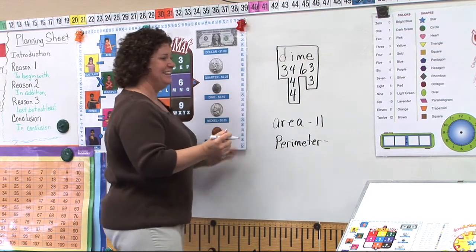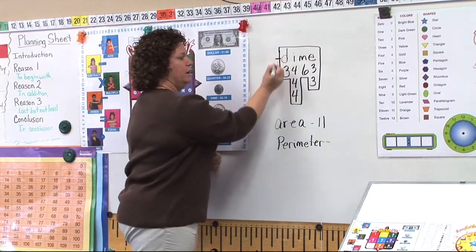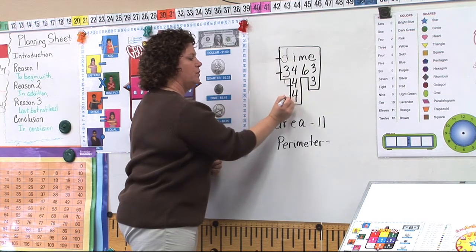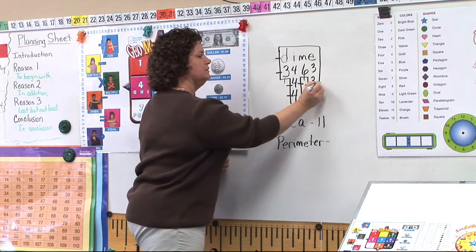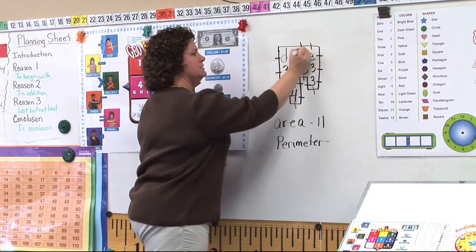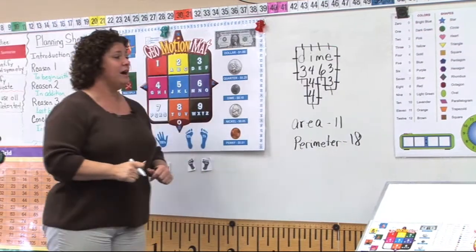Pretty cool, right? And then whenever we do the perimeter, they just go around one, two, three, four, five, six, seven, eight, nine, ten, eleven, twelve, thirteen, fourteen, fifteen, sixteen, seventeen, eighteen. So the perimeter of the word dime is eighteen.